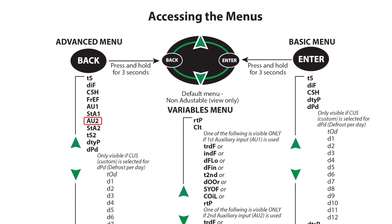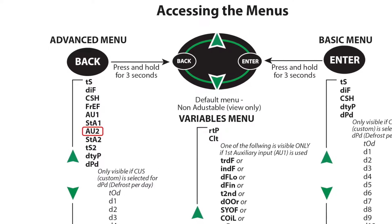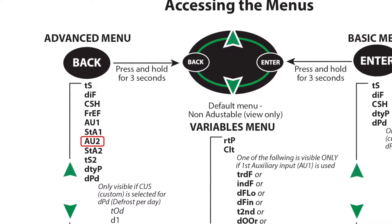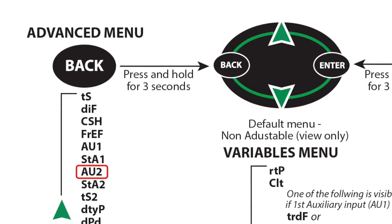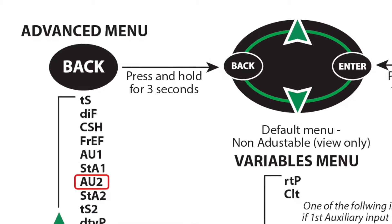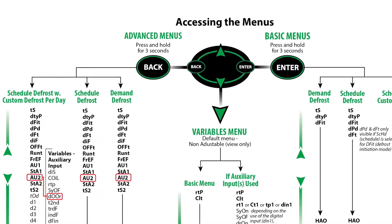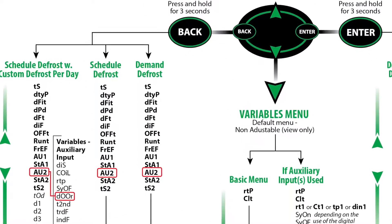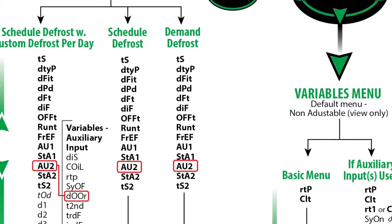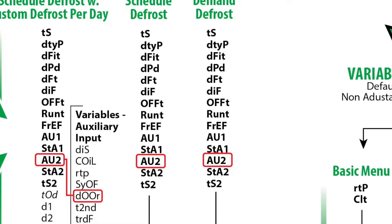First, let's take a look at the illustration of the controller's navigation. As you can see, under the advanced menus the set point AU2 is circled — this stands for Auxiliary Input 2. Either AU1 or AU2 can be used for the door switch; however, the Key2Adaptive is factory programmed with AU1 as a second coil sensor. The options for auxiliary inputs shown here include door.